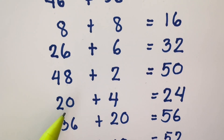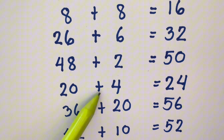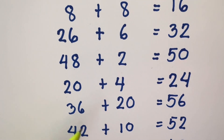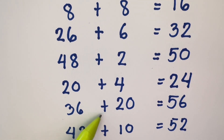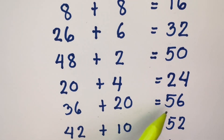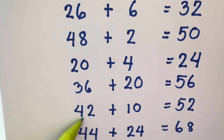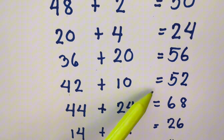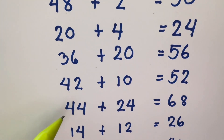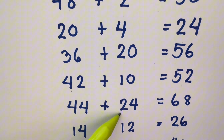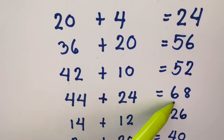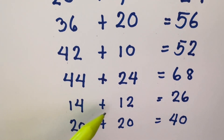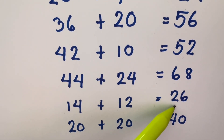...to 50. 20 plus 4 is equals to 24. 36 plus 20 is equals to 56. 42 plus 10 is equals to 52. 44 plus 24 is equals to 68. 14 plus 12 is equals to 26.